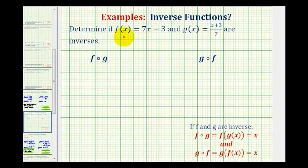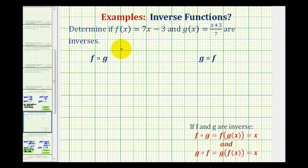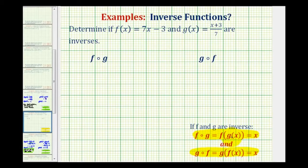We want to determine if the two given functions are inverses of one another. Remember, inverse functions are two functions that undo each other. So to show if two functions are inverses of one another, we have to show that f of g of x is equal to x, and also that g of f of x is equal to x. This is a way of verifying that for every input, the two functions will undo each other.